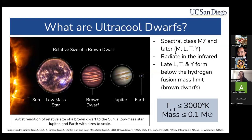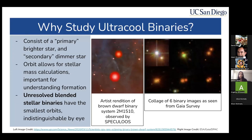So first, what are ultracool dwarfs? These are a specific type of star, spectral class M7 and later, and they radiate in the infrared, meaning we can't see them in the visible band. They include M, L, T, and Y types. L, T, and Y form below the hydrogen fusion mass limit. They're very cold at less than 3,000 degrees Kelvin and very small at 0.1 times the mass of the sun — about the size of Jupiter.